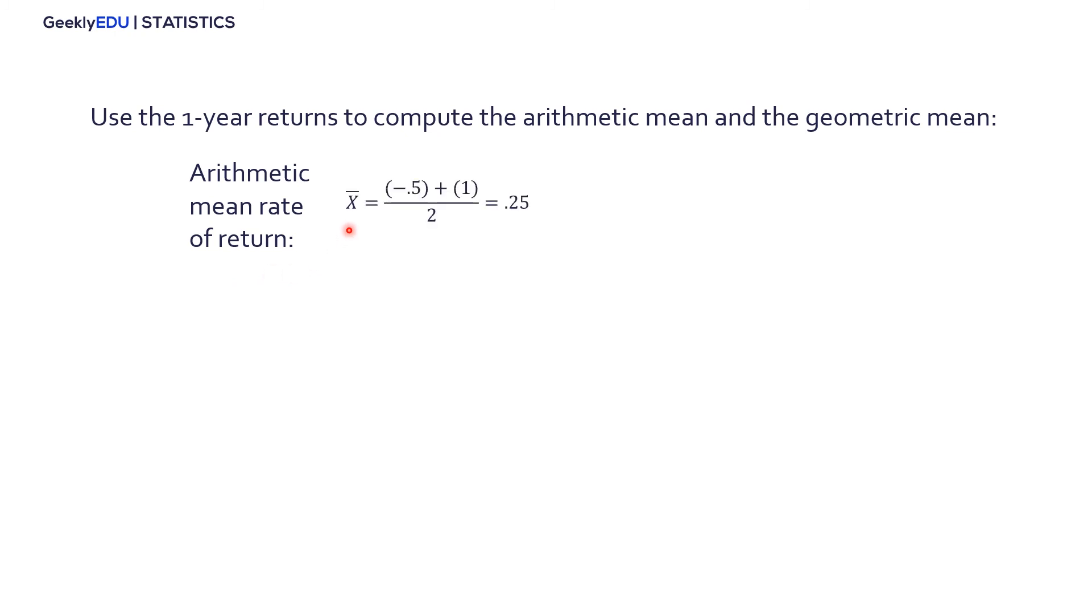So, what happens if we take the previous problem and we use both the geometric mean and the arithmetic mean? Are we going to get different results? So, let's use the one-year returns to compute the arithmetic mean and the geometric mean. One-year return meaning from the end of year 1 to the end of year 2. So, if we start off with the arithmetic mean rate of return, we plug everything into the formula. X bar equals, this is the 50% decrease, this is the 100% increase. So, negative 0.5 plus 1 divided by 2 equals 0.25 or 25% gain.